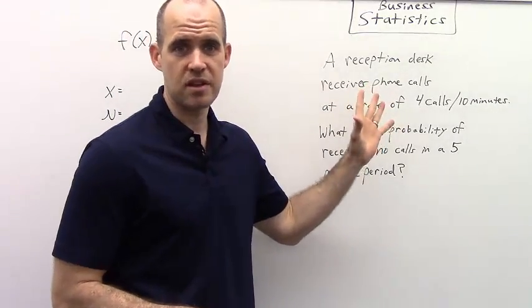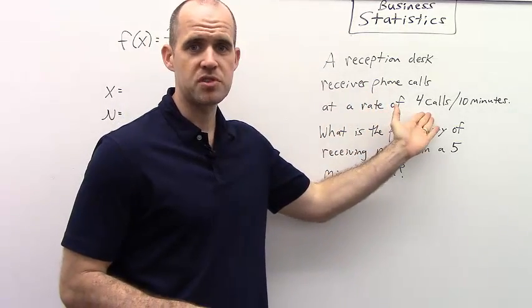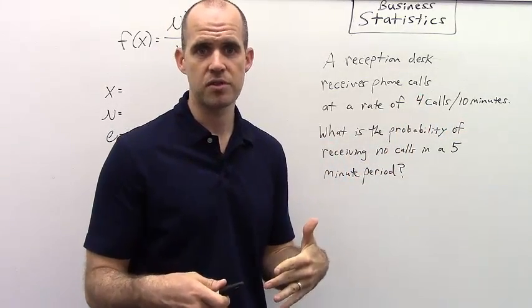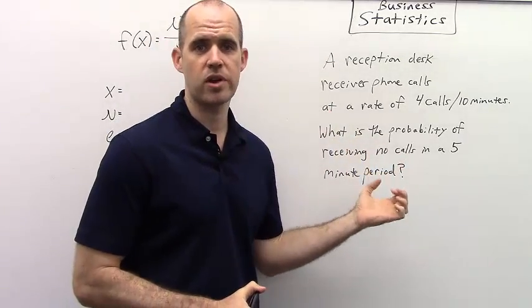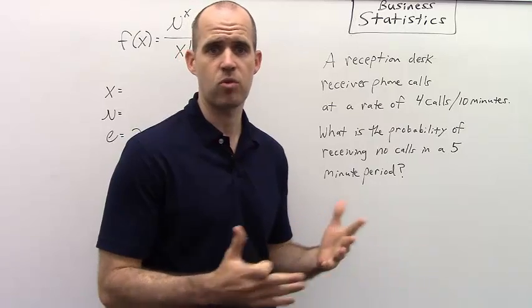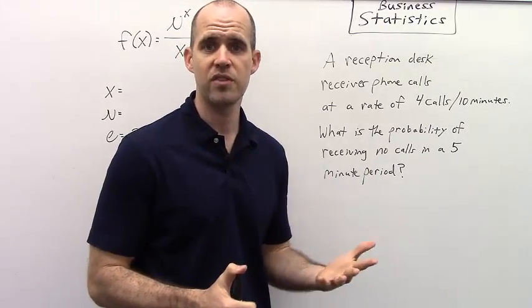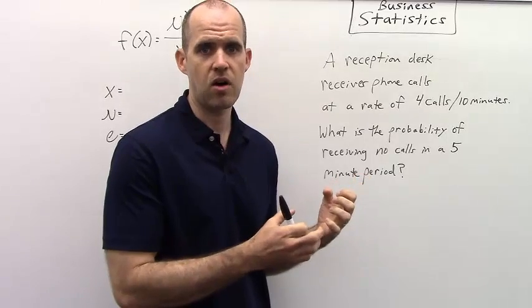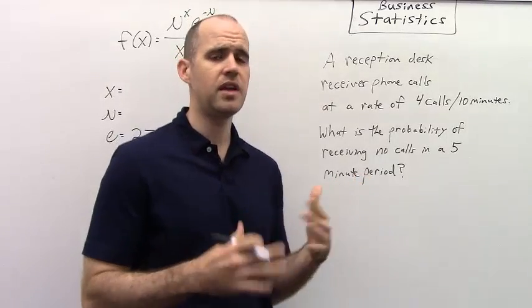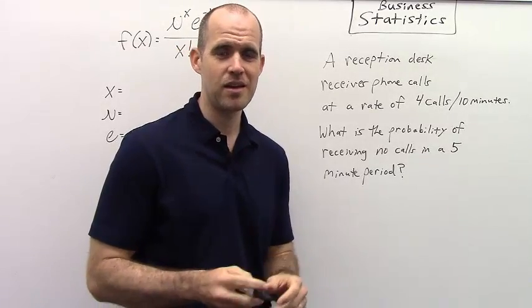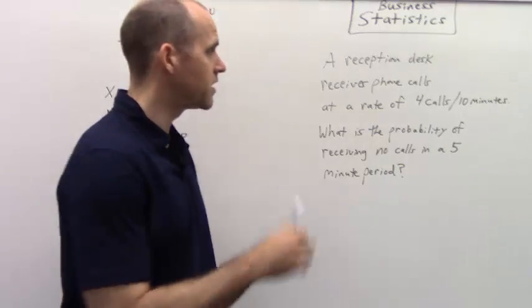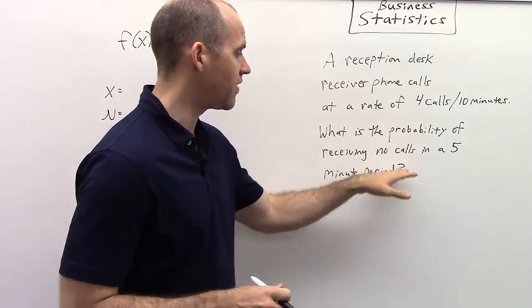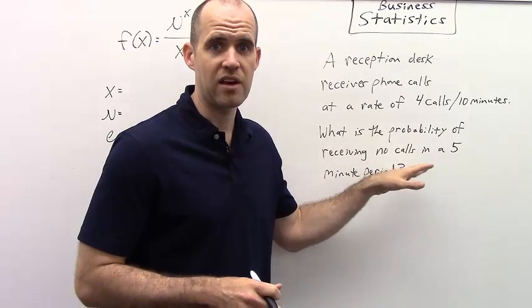Let's imagine this receptionist desk. And at this desk, it's typical to receive about four phone calls coming in every 10 minutes. That's the average rate of phone calls received. Now let's imagine that the person working at this desk has to step away for about five minutes for whatever reason, using the restroom or a quick meeting, make a phone call, whatever that might be. But their concern, they want to make sure that they don't miss an incoming call during this time that they're gone. Being a statistically minded individual, they bust out a pen and paper and their calculator in order to perform a Poisson probability distribution because they want to know the probability of not receiving any calls within a five-minute period.